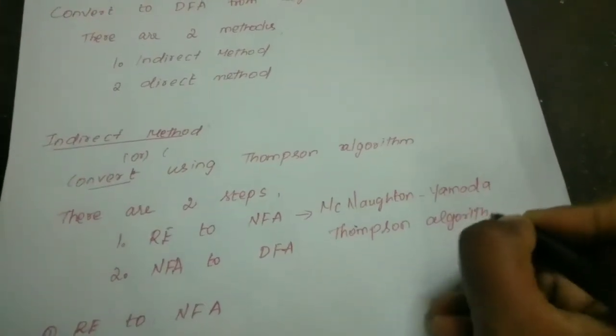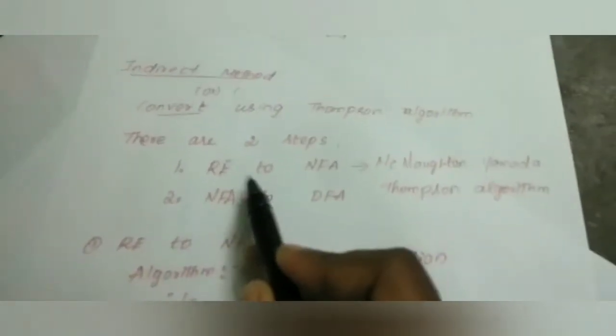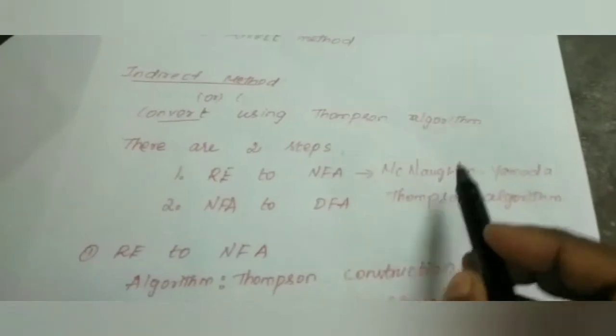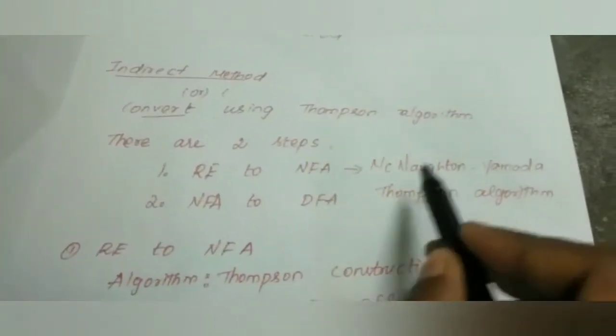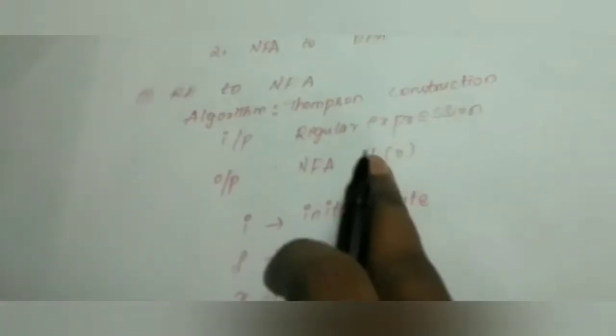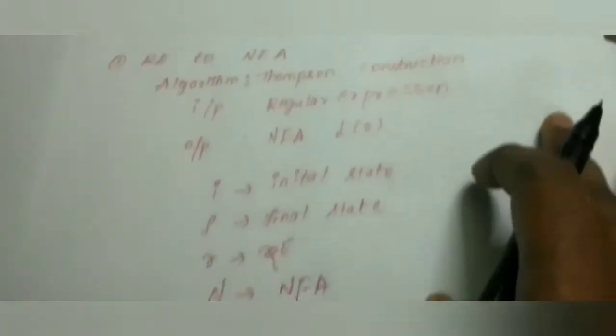Because we are not converting directly from regular expression to DFA, the first step involves converting a regular expression to an NFA. This is done using the McNaughton-Yamada-Thompson algorithm. In this algorithm, we give a regular expression as input and the output will be the NFA.